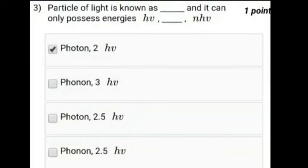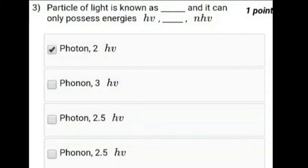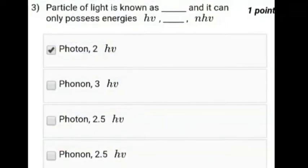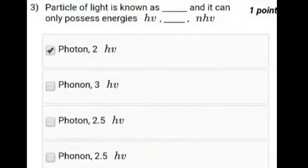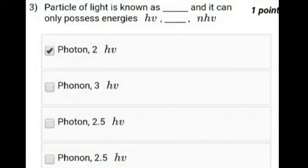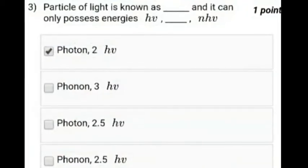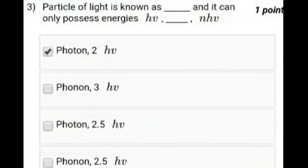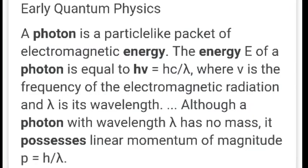And the third question is: particle of light is known as dash and it can only possess energy HV or NHV. So the answer is the first option. The proof is here.